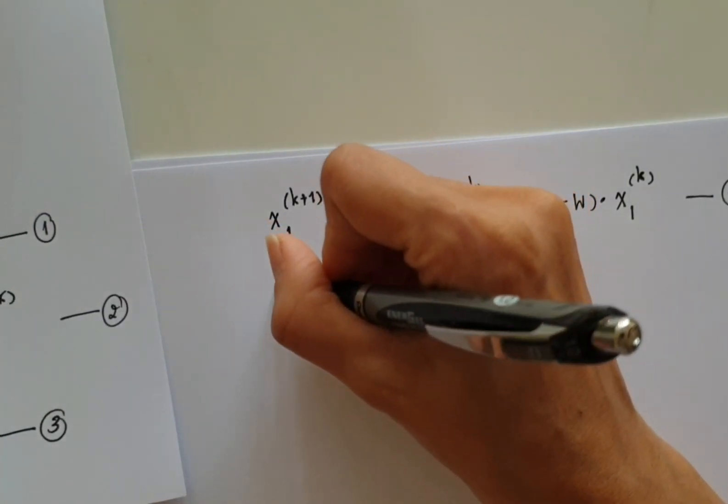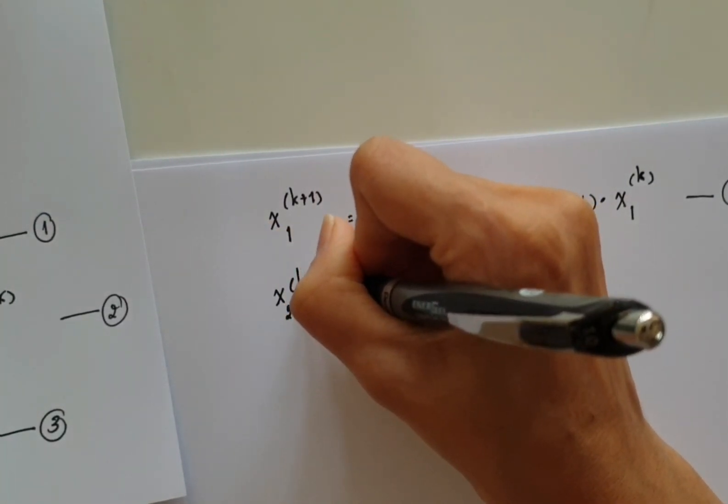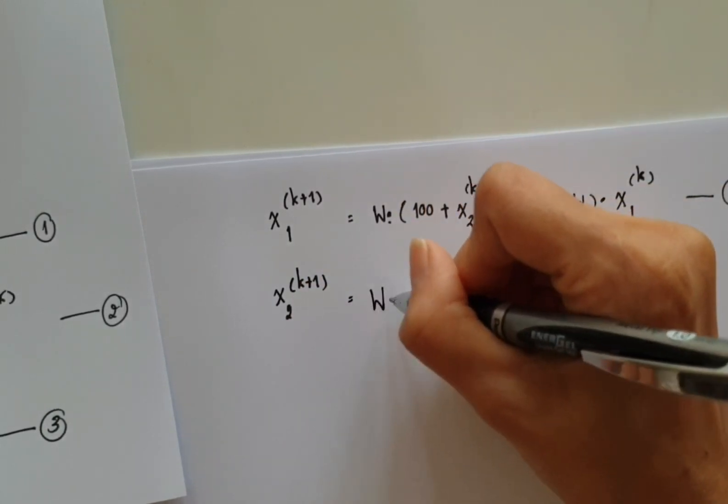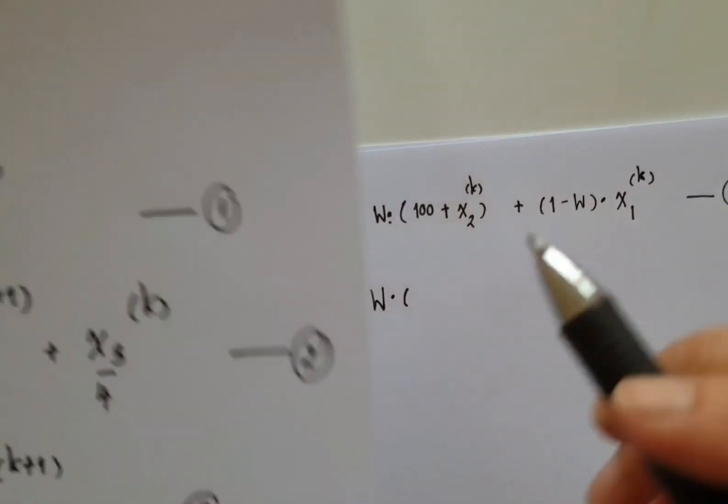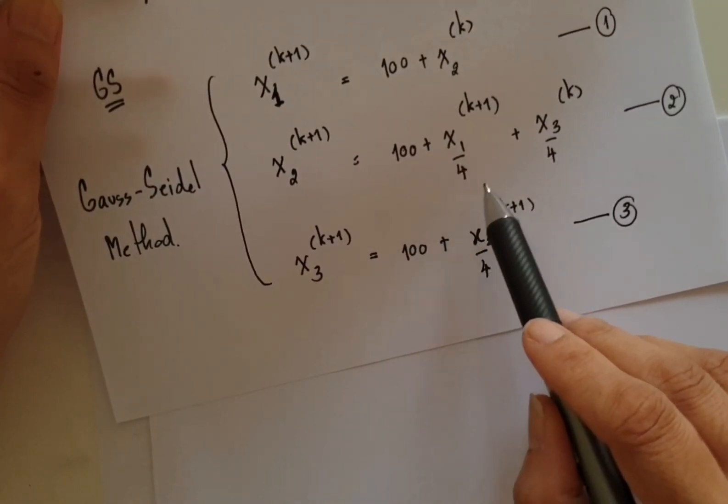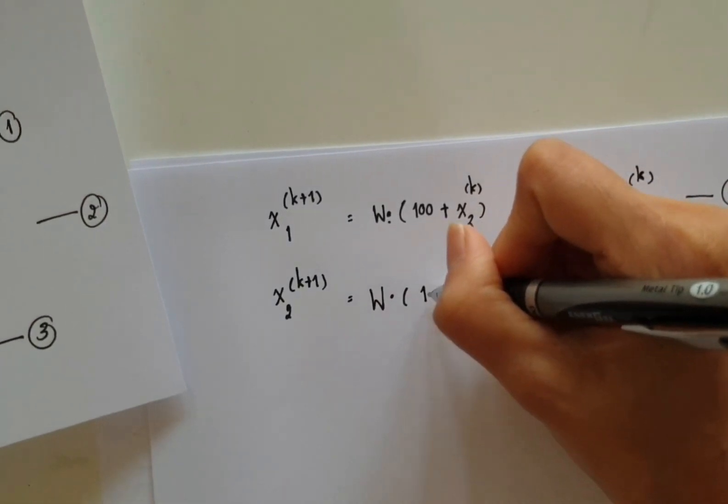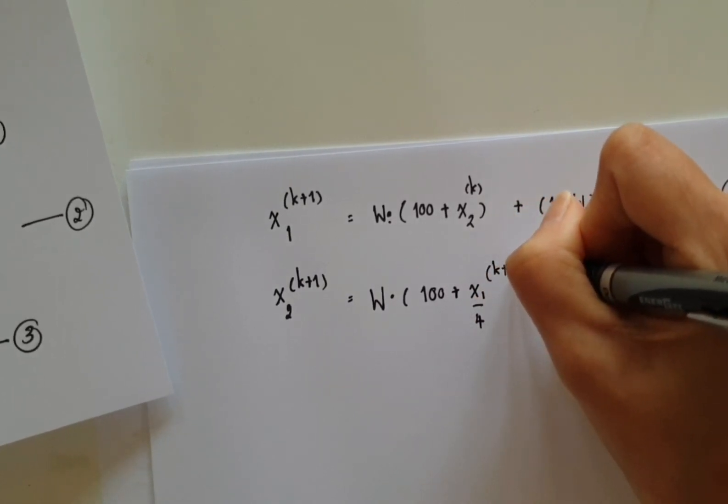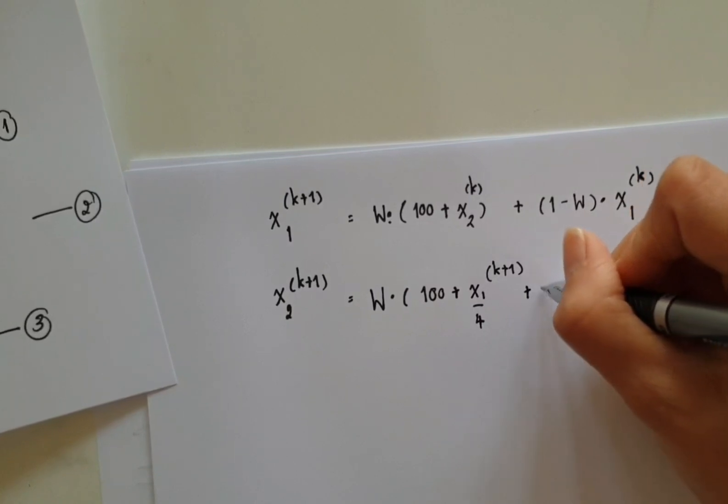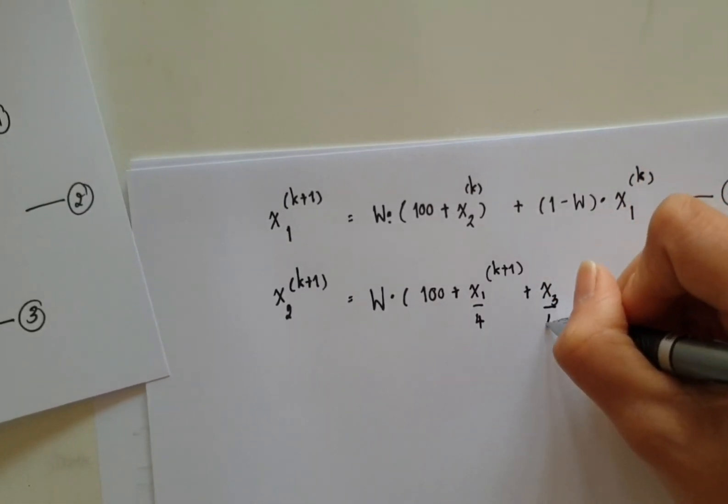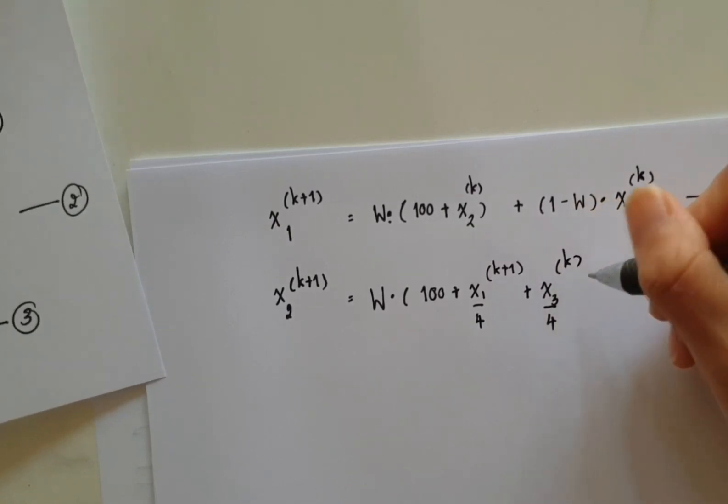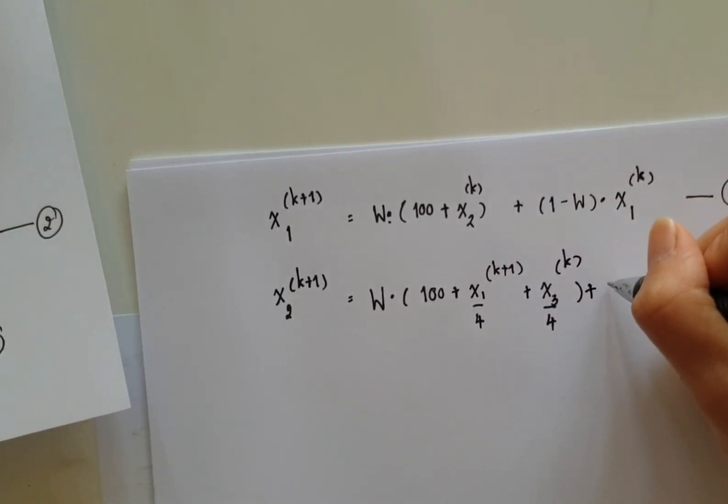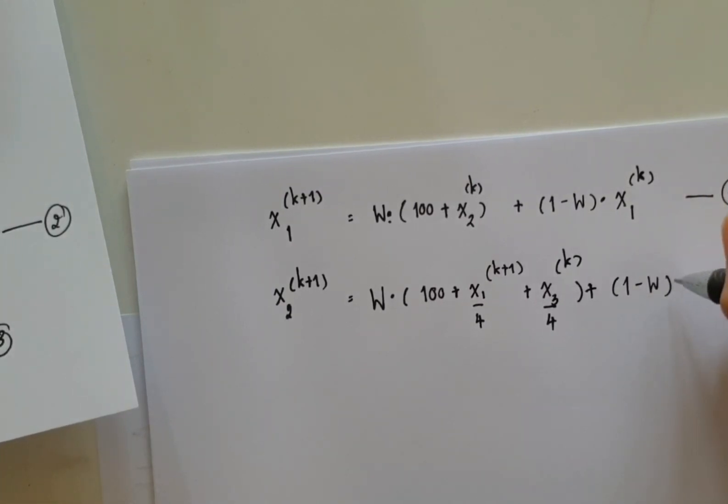And the next equation is x_2 at k+1. It will equal to weight times 100 plus x_1 over 4 plus x_3 over 4. So this is from Gauss-Seidel. This is equation 5.